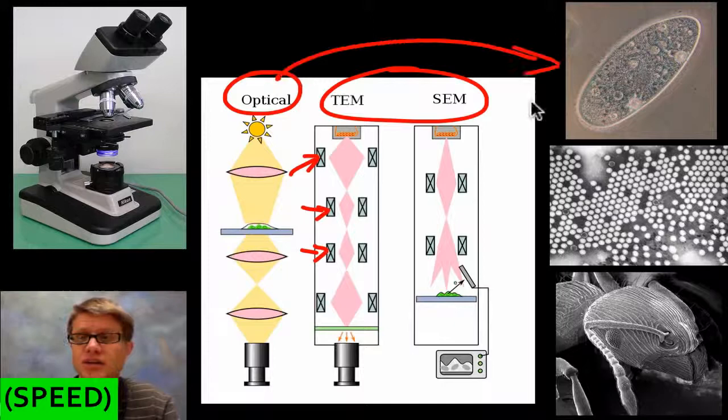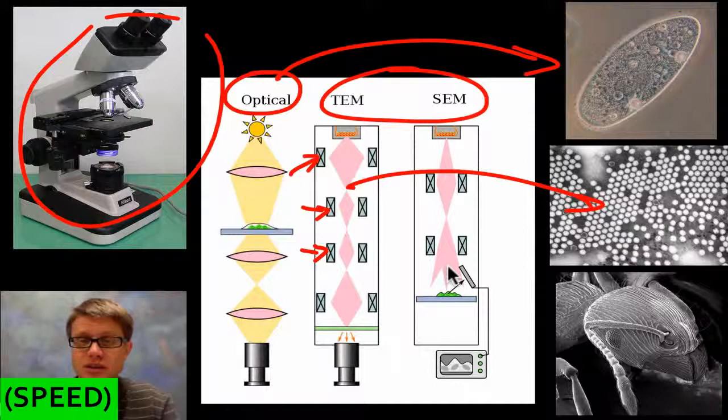So here's some pictures that were taken with these. This would be a paramecium with an optical microscope, one that you'd have in a typical biology classroom. These ones are taken by transmission electron microscope. These are little viruses, or this would be an ant that you're looking at.